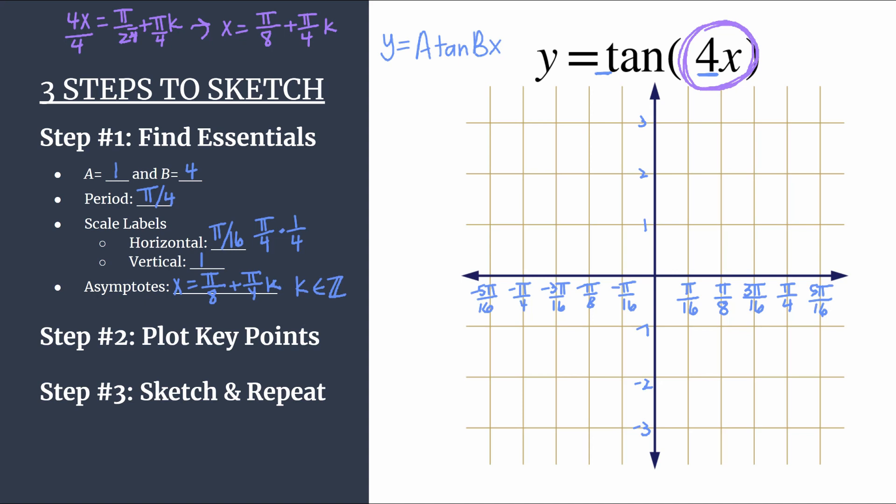Another really good thing to know is that your first positive asymptote for these basic tangent graphs should happen at your second horizontal tick mark. So that's right here at pi over 8. And if you let k equals 0 for your asymptotes equation, you'll see x equals pi over 8. So we should feel really good. Everything's matching up nicely. We're getting consistent information. We are on the right track. So that is our essential information. We have done most of the work already.